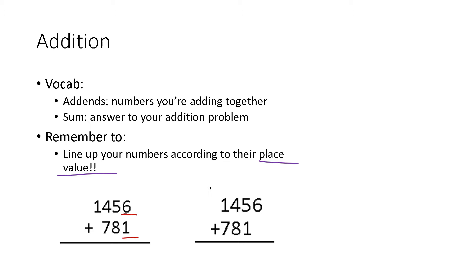If we look at our problem on the left here, both the six and the one are in the ones place in their respective numbers. The 1456 has six in the ones place; 781 has one in the ones place. Five and eight are both in the tens place. Four and seven are in the hundreds place. And then only one number has a digit in the thousands place — that's our one in 1456. Contrasted to our number on the right: here both the six and the one are still in the ones position in their respective numbers, but because we've set up the problem incorrectly, the one that is in the ones place is actually written in the tens column. So when we add 781 to 1456, instead of adding one to six and getting seven like we should, we're going to wind up adding one to five and getting 60 instead.